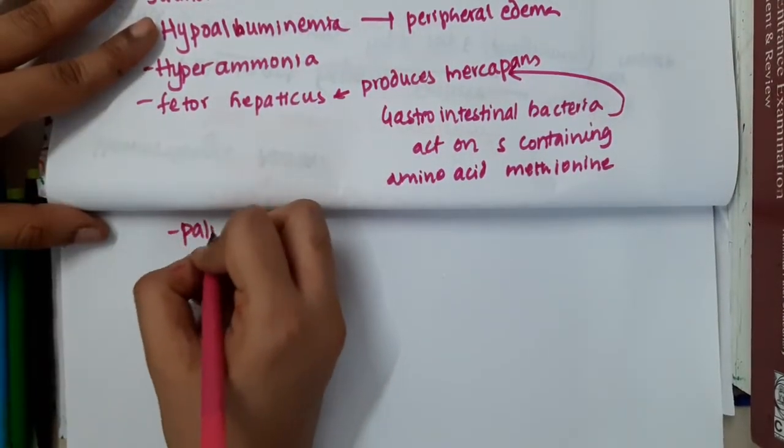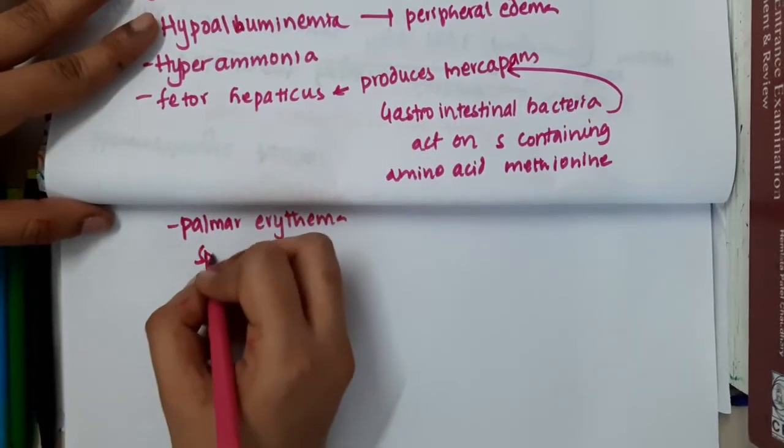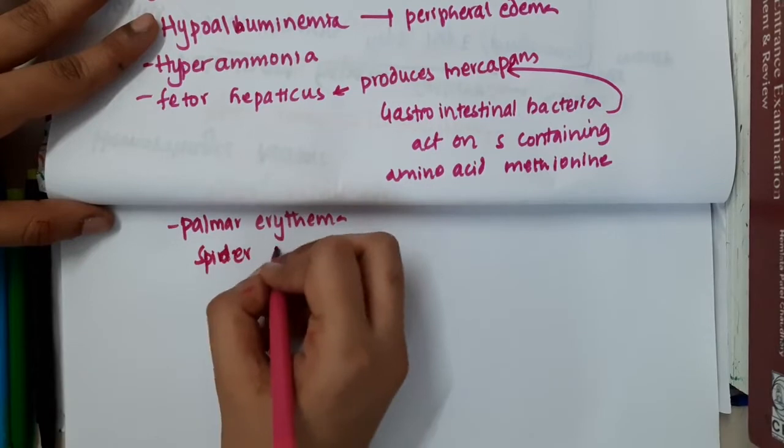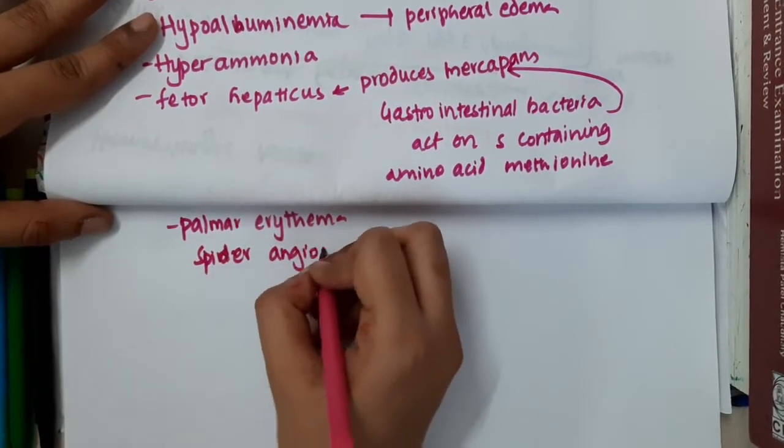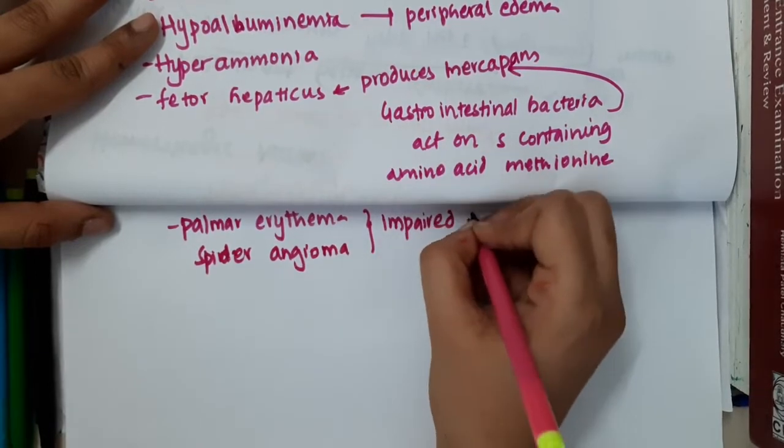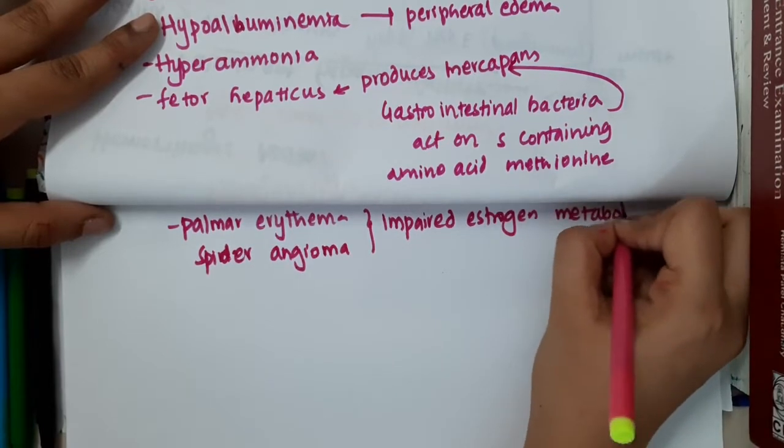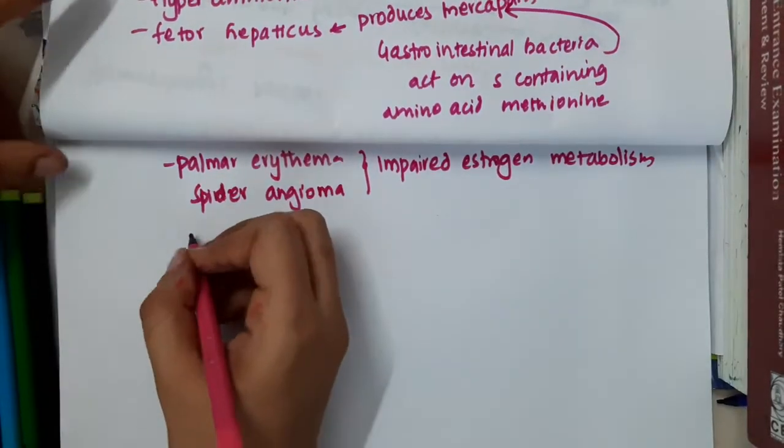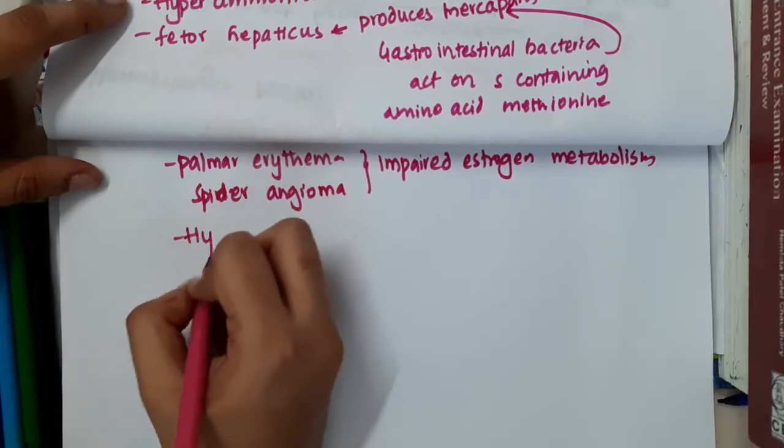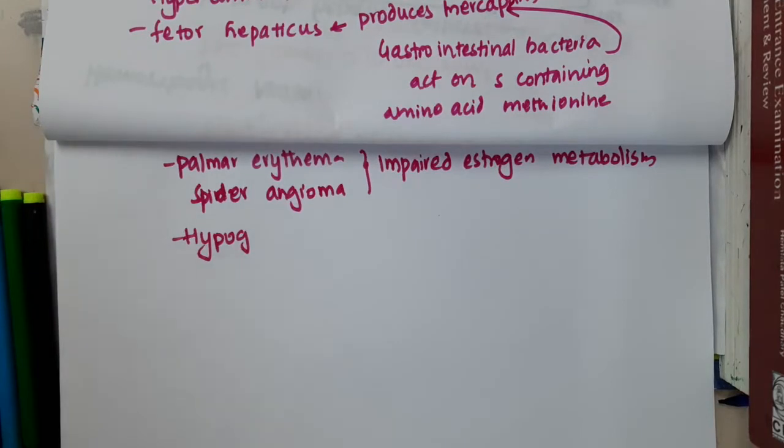Then there will be palmar erythema. You will see presence of palmar erythema and spider angioma are seen. These are mainly due to impaired estrogen metabolism. Because estrogen metabolism occurs in liver, here there is liver cell failure. So increased estrogen causes palmar erythema and spider angioma.